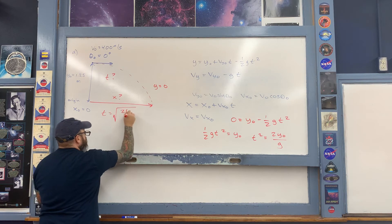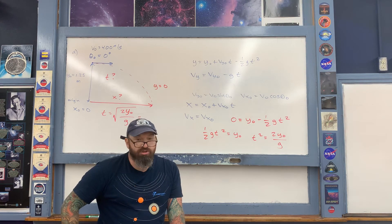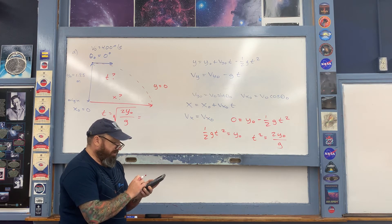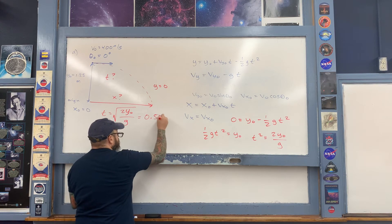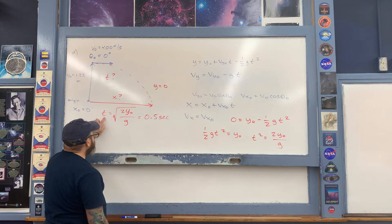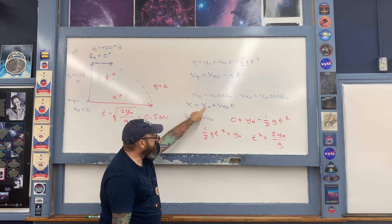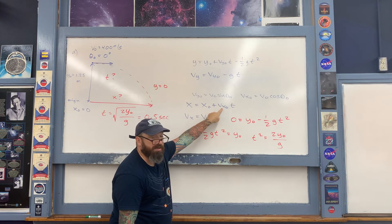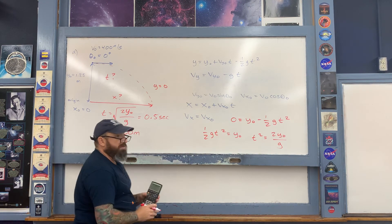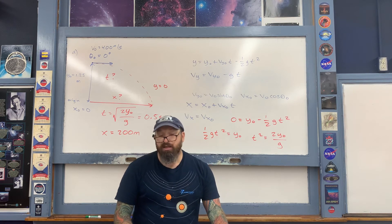Plugging in numbers: t equals the square root of two times 1.25 meters divided by 9.8 meters per second squared, which comes out to one-half a second. So the bullet falls to the ground in only 0.5 seconds. Now find the horizontal position x using the horizontal equation: x equals zero plus 400 meters per second times 0.5 seconds, giving a horizontal displacement of 200 meters.